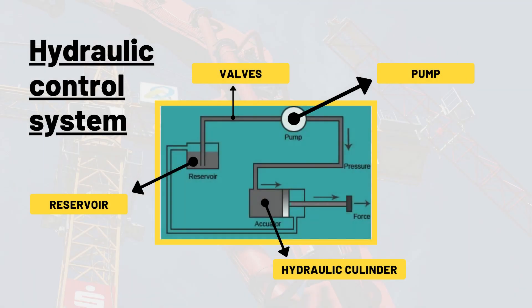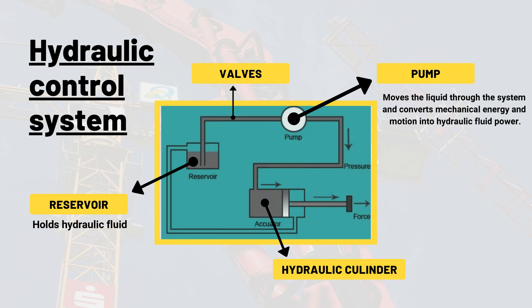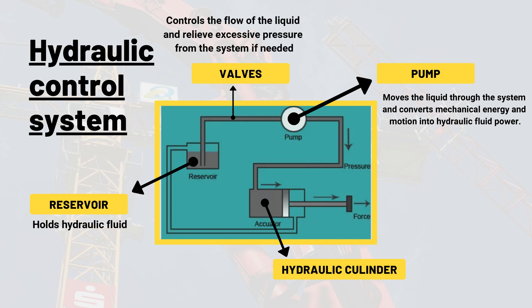Hydraulic systems are made up of numerous parts. There is a reservoir that holds hydraulic fluid. The hydraulic pump moves the liquid through the system and converts mechanical energy and motion into hydraulic fluid power. The electric motor powers the hydraulic pump. The valves control the flow of liquid and relieve excessive pressure from the system. The hydraulic cylinder converts the hydraulic energy back into mechanical energy.